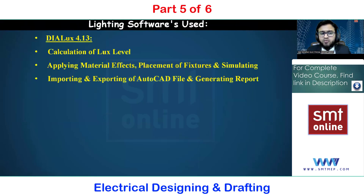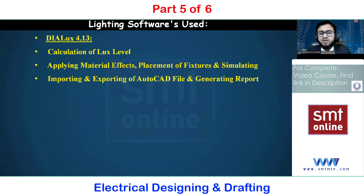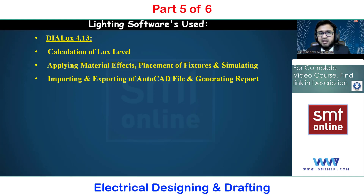For the lighting aspect, we are going to use Dialux software version 4.13, which is the latest version available. Using this software we will determine the number of lighting fixtures based on lux levels, which were already discussed in Chapter 3 of the first module. After obtaining the lux levels and fixture count, we will check the positions as well as material effects.